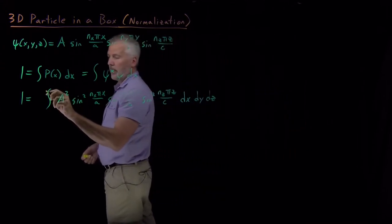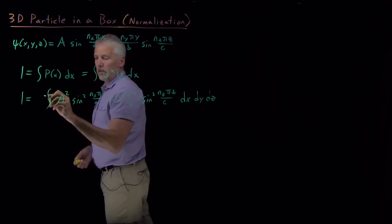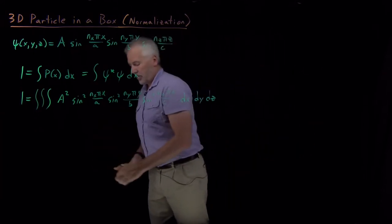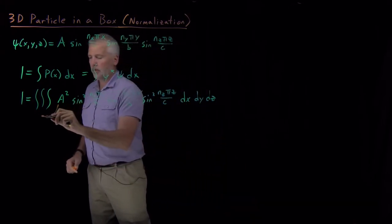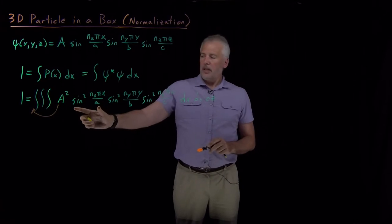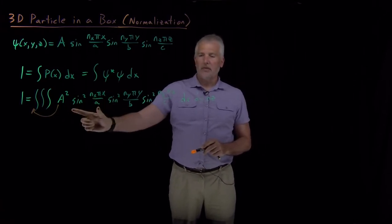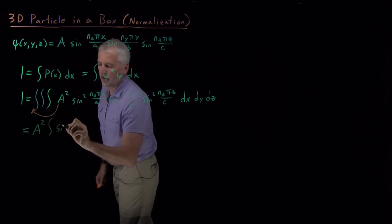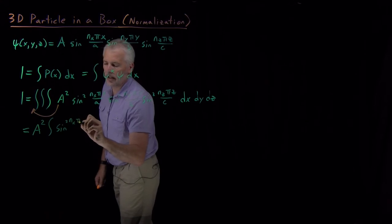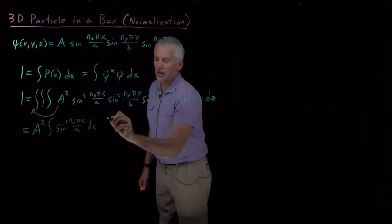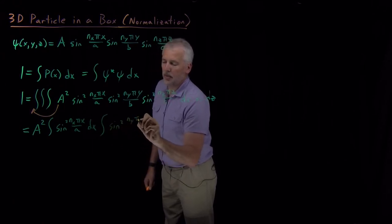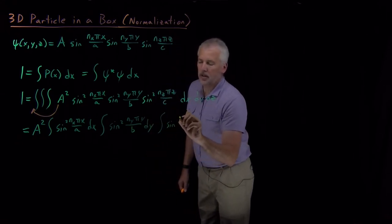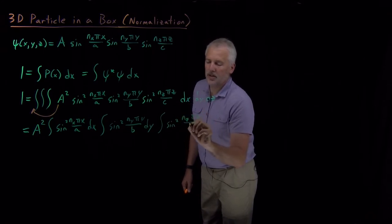This is actually a triple integral — I could write a triple integral sign here. So I've got a triple integral over x, y, and z. The constant A can come out of the integral. The triple integral is actually a product of three separate integrals: a piece that involves x, a separate piece that involves y, and a separate piece that involves z. So I can write this as the integral of sine squared(n₁πx/a)dx, times the integral of sine squared(n₂πy/b)dy, times the integral of sine squared(n₃πz/c)dz.